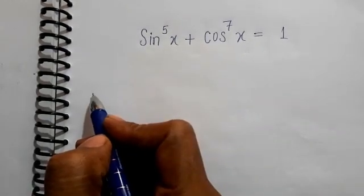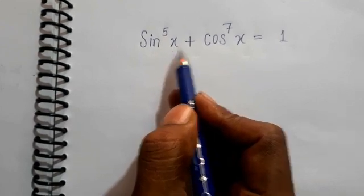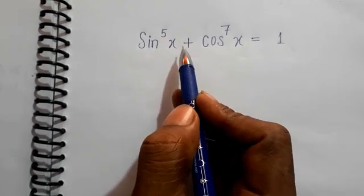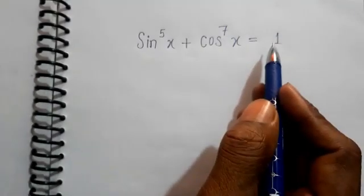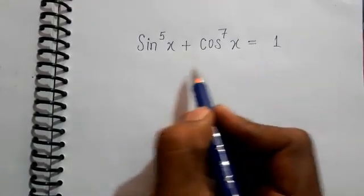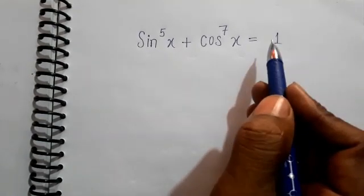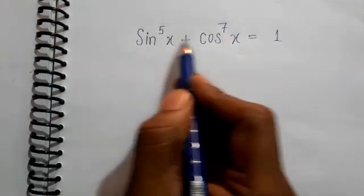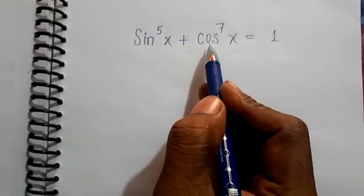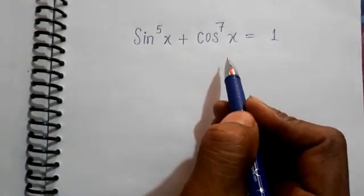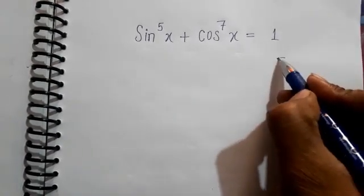Hello friends, welcome to Triple X Learnings. Today we have to solve the value for x to satisfy this equation. We are knowing that 1 is equal to an identity that should match with sin⁵x + cos⁷x. So what is that identity?